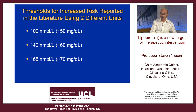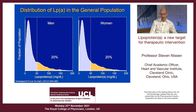This is the distribution from the Copenhagen City Heart Study — Borgen Nordiskard, who is a tremendous colleague in this field — showing that about 20% of men and women have levels above approximately 50 milligrams per deciliter. Most of us are in the blue, but some of us are in the gold territory. And if you're in the gold territory, you have increased risk.